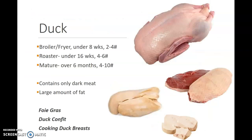Let's talk about duck. There are three main types of duck: a broiler, roaster, or mature duck. A broiler or fryer duck is usually under eight weeks old and is around two to four pounds. A roaster duck is under 16 weeks old and is four to six pounds. This is the majority of ducks we will find in our grocery stores.